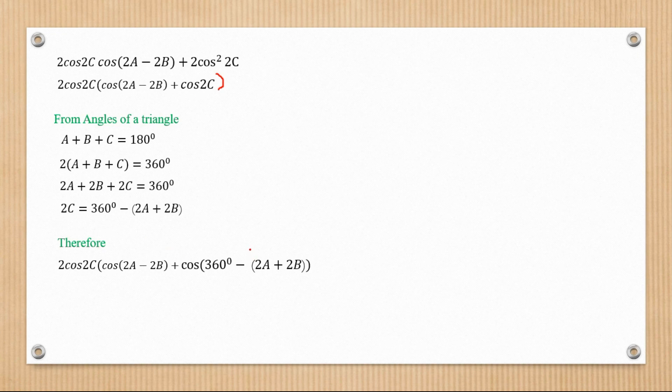Now applying the rules of double angles here, we can see that expands to that. Cos of 360 is positive 1, but sine of 360 is 0. So this part cancels and disappears. We end up remaining with cos 2A plus 2B.